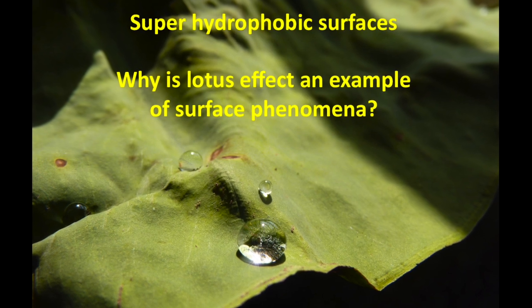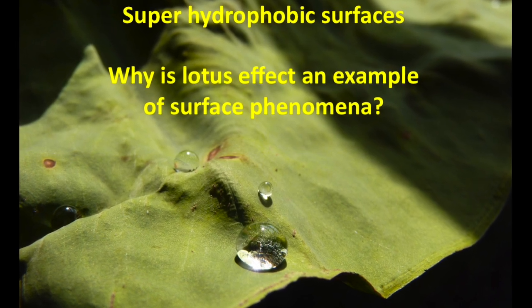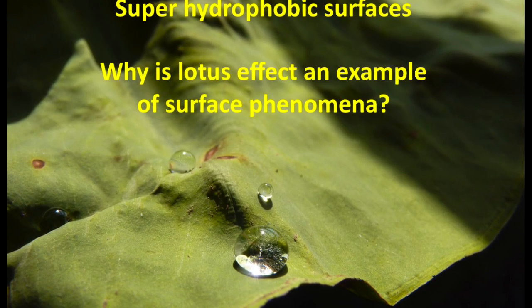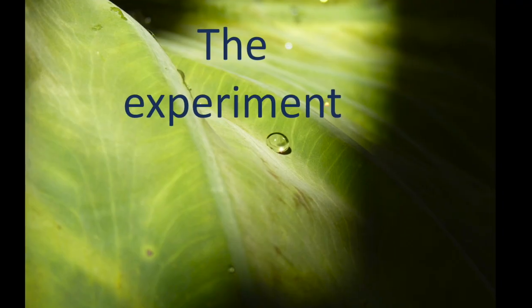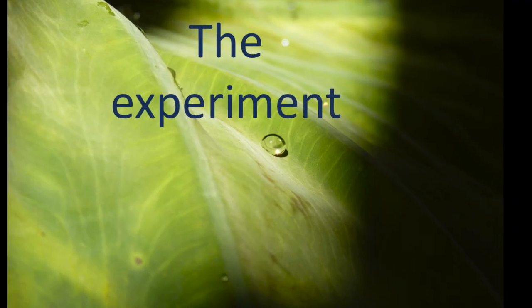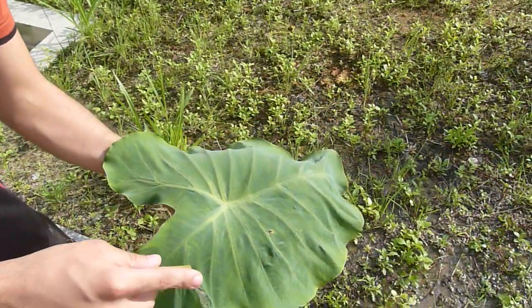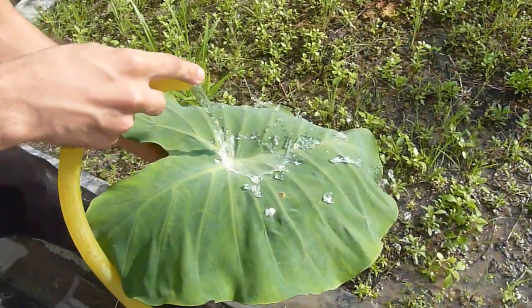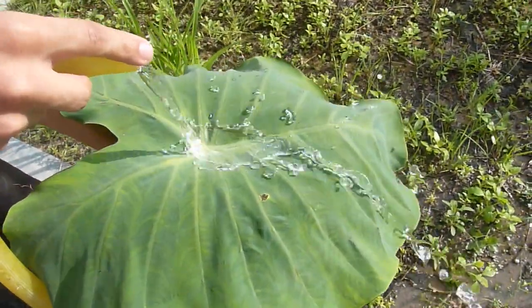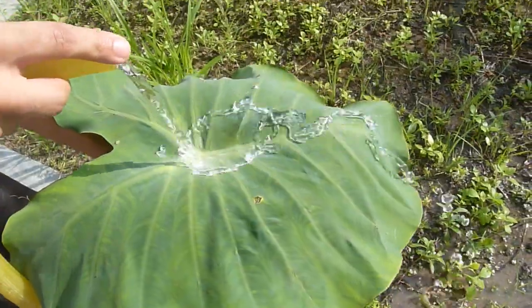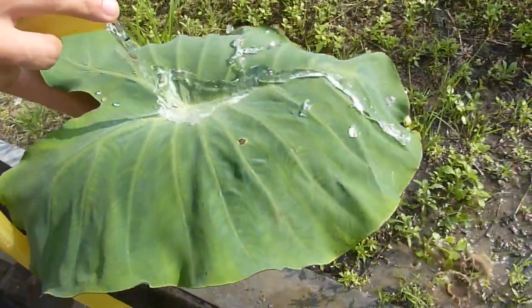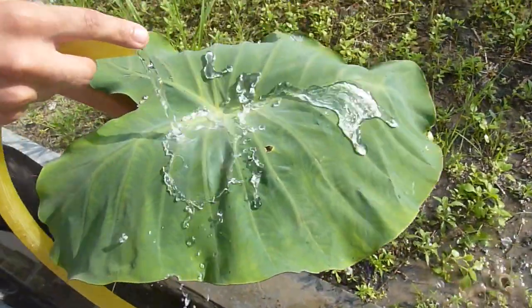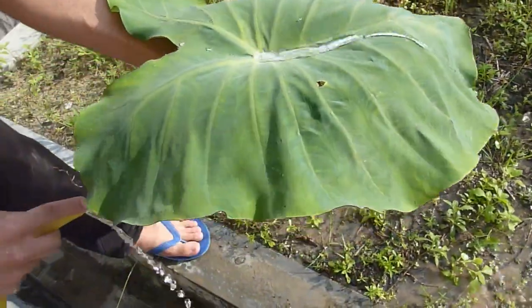The aim of this video is to demonstrate and explain the hydrophobic nature of a surface. The experiment was conducted on a hydrophobic leaf. As you can see, when a steady flow of water is directed towards the leaf, no water droplets stick or wet the surface of the leaf.